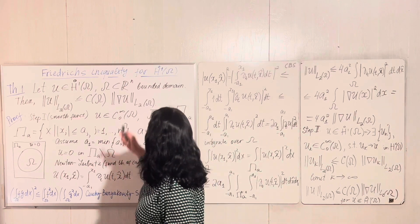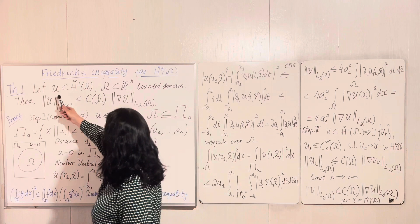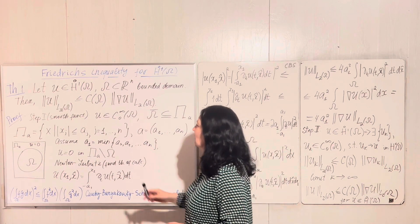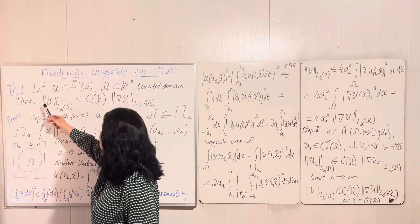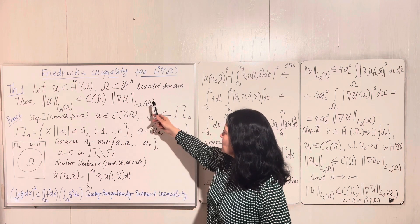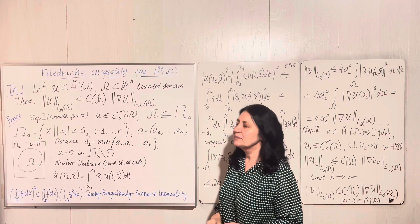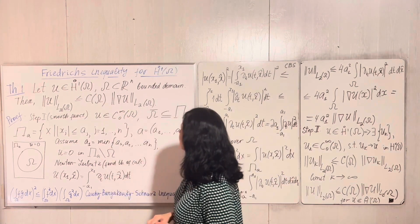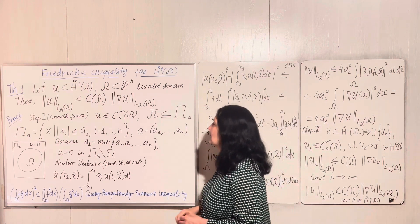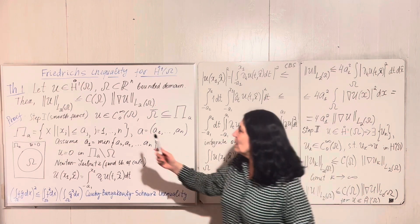Friedrich's inequality for the space H1-zero: if u is a function from H1-zero, then we can evaluate its L2 norm in terms of the L2 norm of its gradient. The constant c depends only on the domain omega. I want to stress that this inequality holds only for H1-zero — for the full space H1 it will not be true.